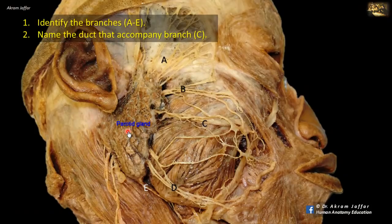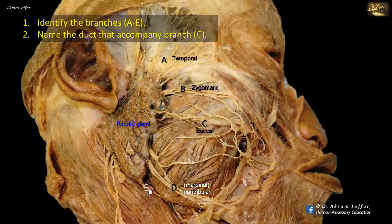Five branches emerge from the anterior border of the gland, some of which may be duplicated, which is why we talk about groups of branches. The branches are: A, temporal; B, zygomatic; C, buccal; D, marginal mandibular; and E is the cervical branch that supplies the platysma muscle.